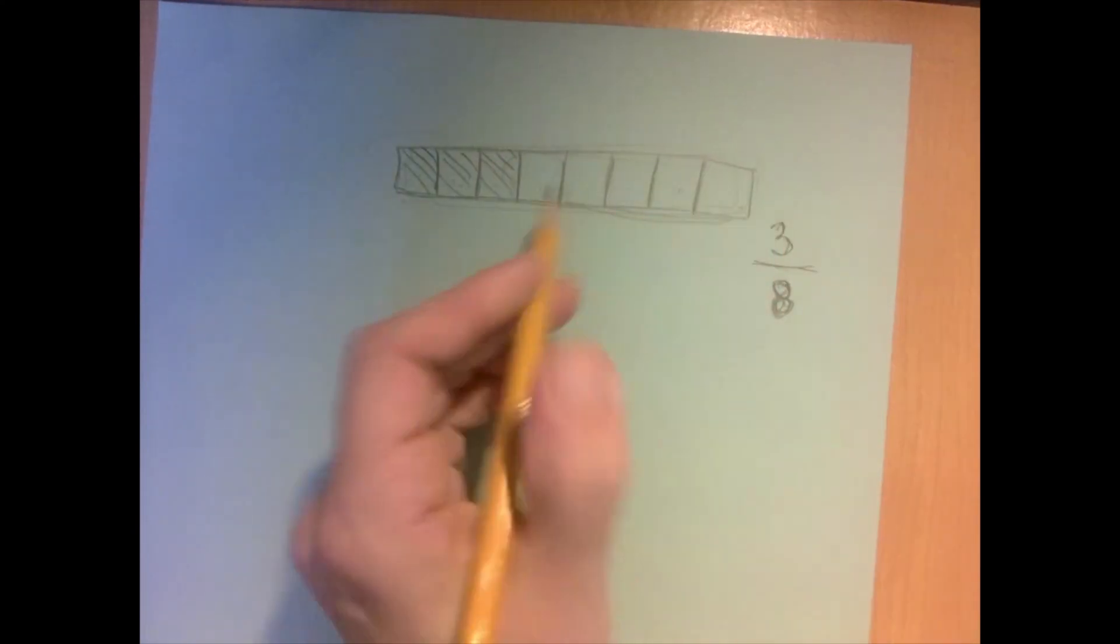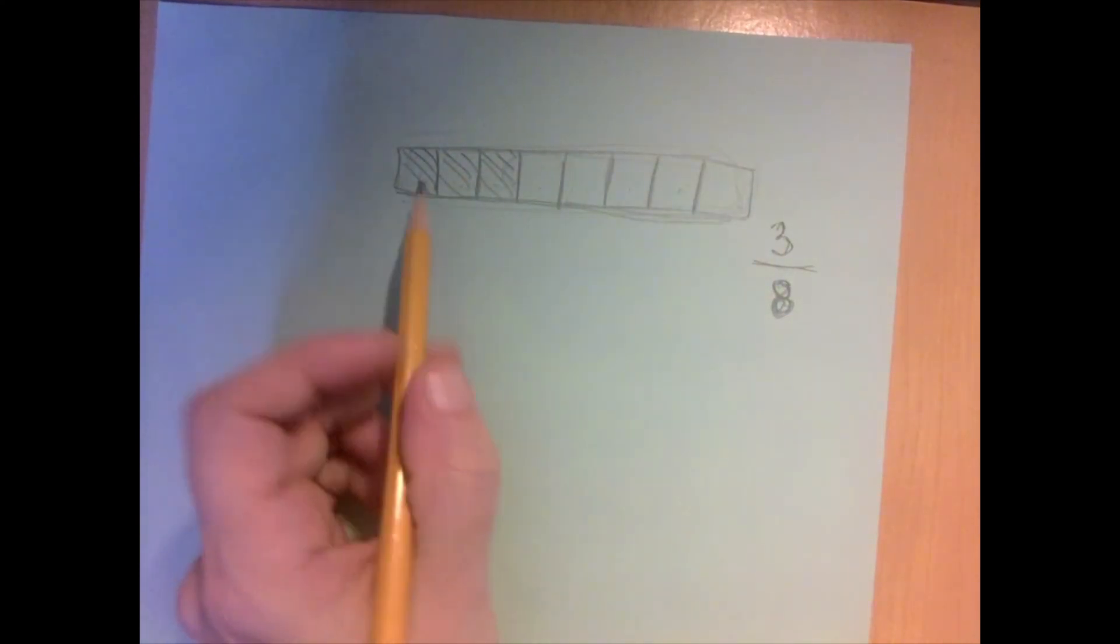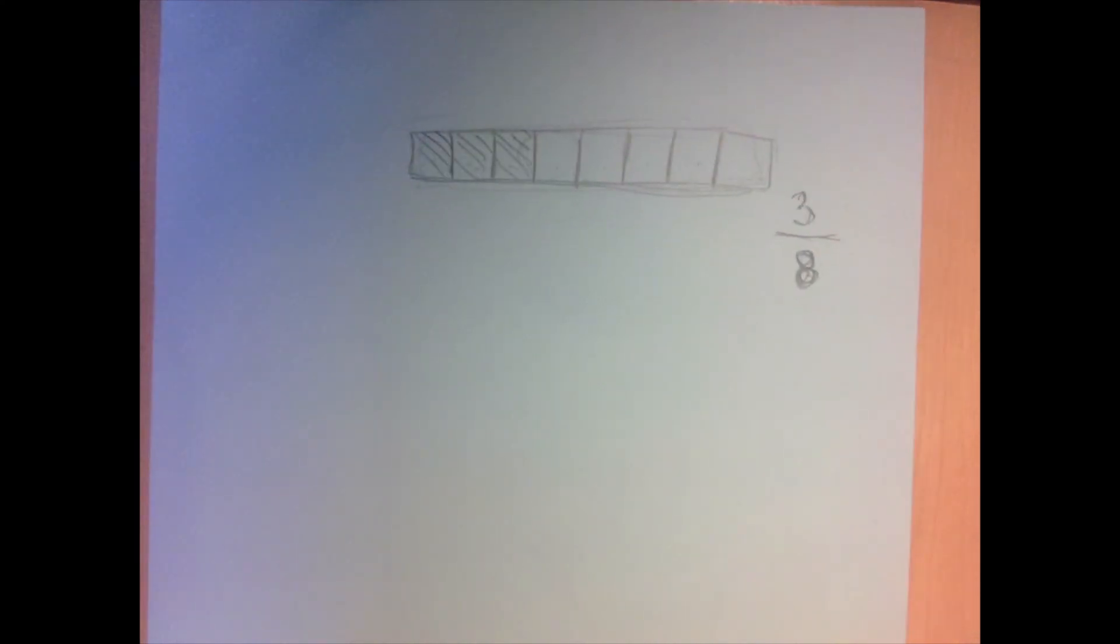And now we count, we have one, two, three. So if this entire thing represents one whole, then this region can be represented by the fraction three over eight. Thank you for watching.